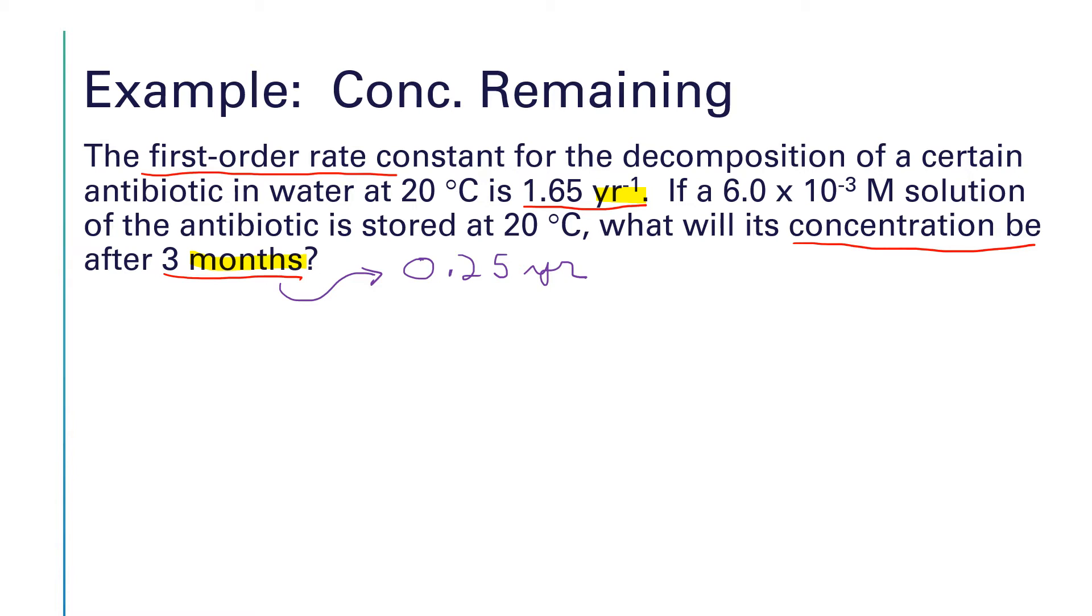All right, since it's a first order reaction, the first order integrated rate law says the natural log of a sub t is equal to minus kt plus the natural log of a naught. Remember a naught means the concentration at time zero.